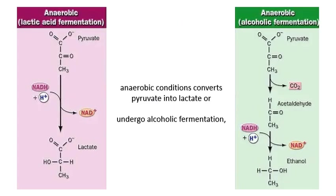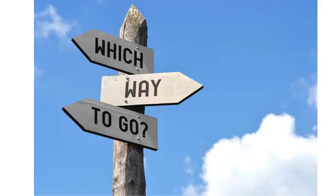In the case of the absence of oxygen, called anaerobic conditions, pyruvate can be converted into lactate or can also undergo alcoholic fermentation depending on the organism. This concept is called the fate of pyruvate, which will be discussed in another separate video. This fate of pyruvate will be processed depending on the availability of oxygen. If oxygen is available, the pyruvate is transported to the mitochondria, where it will undergo oxidative decarboxylation which produces acetyl-CoA.